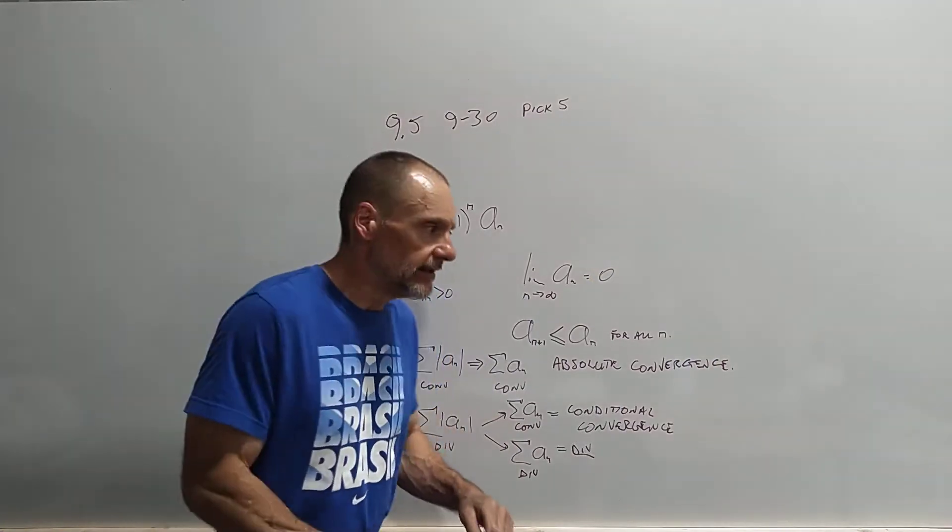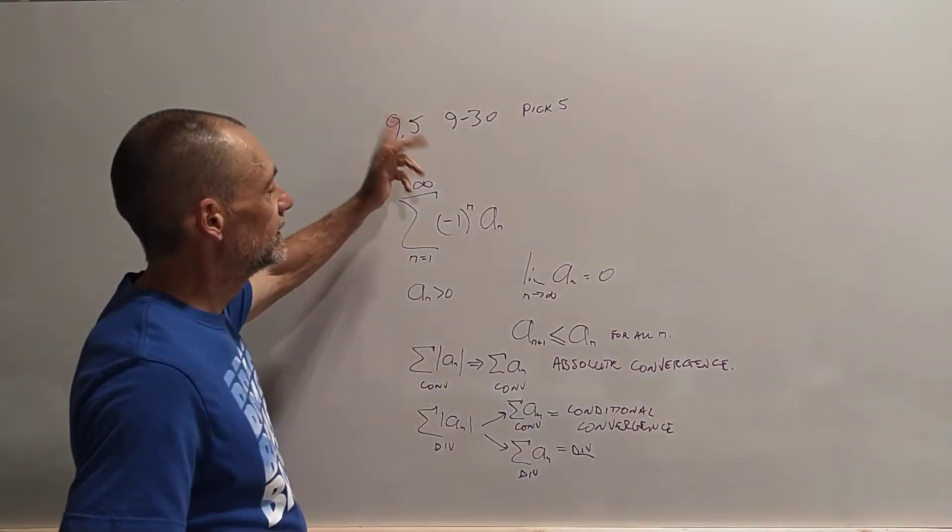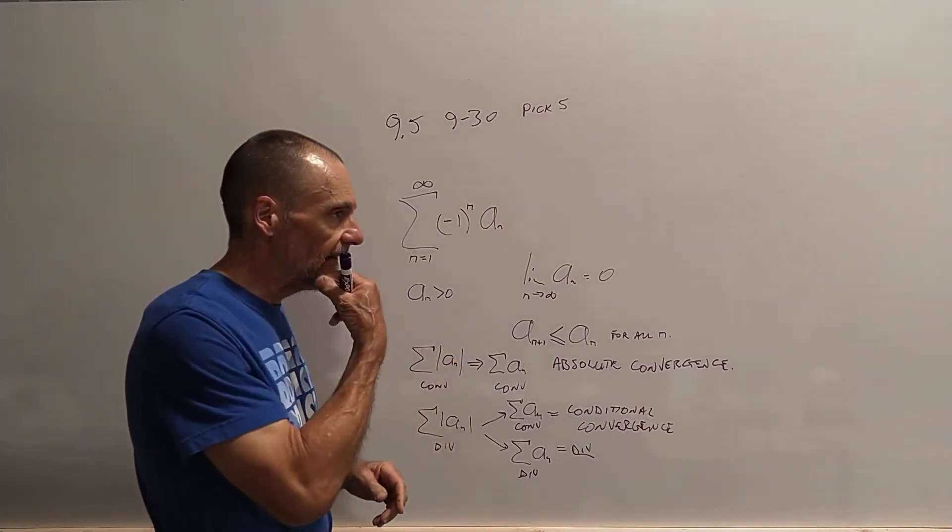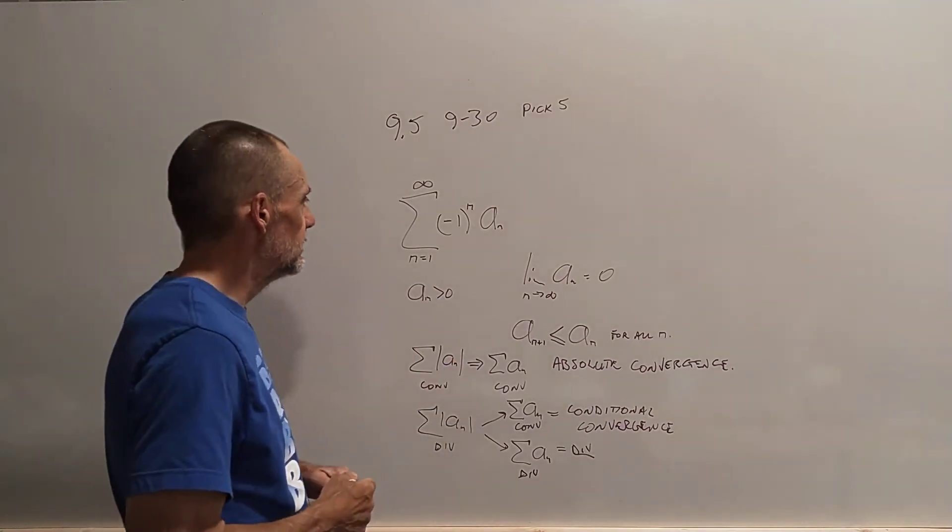So for the Calculus 2 class, this is 9.5. These are the problems. You can pick 5, and I'll ask you to show me one of them, possibly.